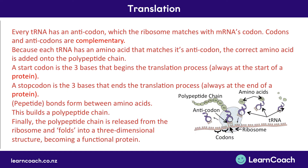To conclude, bonds — called peptide bonds — are formed between the amino acids. This creates a polypeptide chain which is released by the ribosome and folds itself up into a 3D structure, forming a functional protein. This is the process of translation.